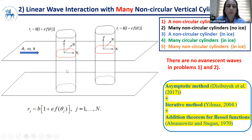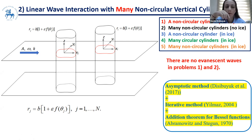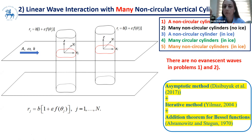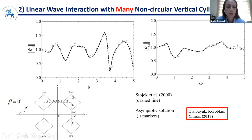In problem two, we have no ice but increase the number of cylinders to many non-circular cylinders. We incorporate local polar coordinates for each cylinder, where r_j, theta_j is the local polar coordinate for the j-th cylinder. We solve this problem again by the asymptotic method combined with an iterative method, and the addition theorem for Bessel functions is used for the interaction of waves with cylinders. For four square cylinders, wave forces are calculated in the x-direction, and our asymptotic solution (circle markers) shows good agreement with Stojic et al.'s solution (dashed line).